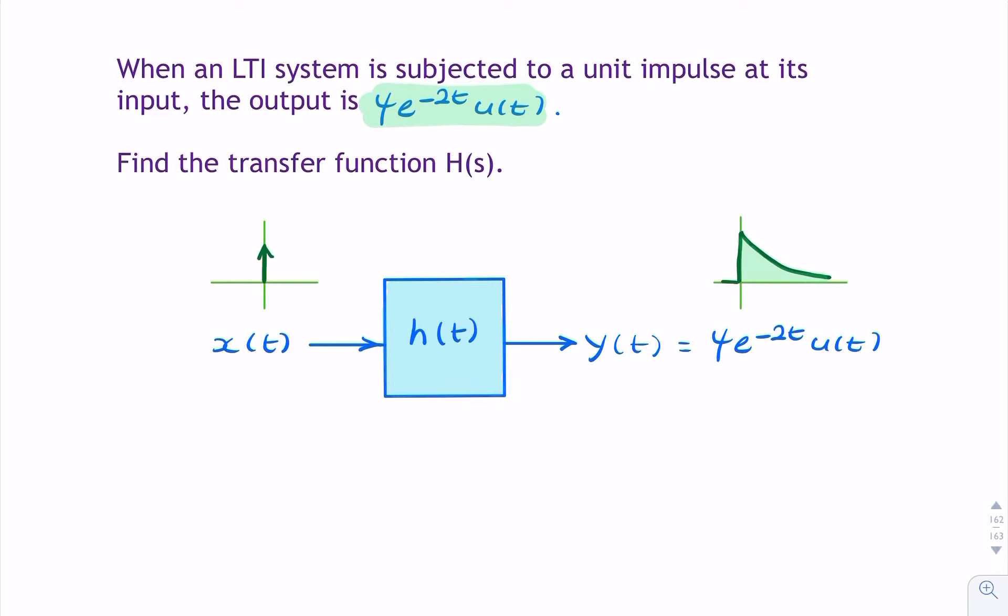So we're given the output, a decaying exponential. So this decaying exponential, that is, by definition, our impulse response.